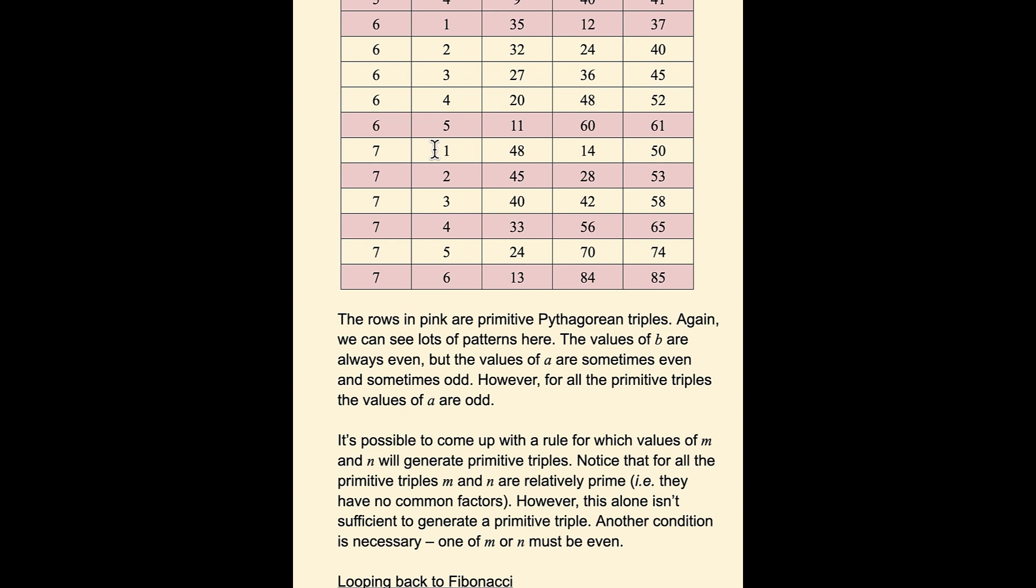In order for it to generate a primitive triple, we need one additional condition, which is that either m or n must be even. So for 6, 1, that generates a primitive. For 7, 4, that generates a primitive. 7, 2, that generates a primitive, etc.